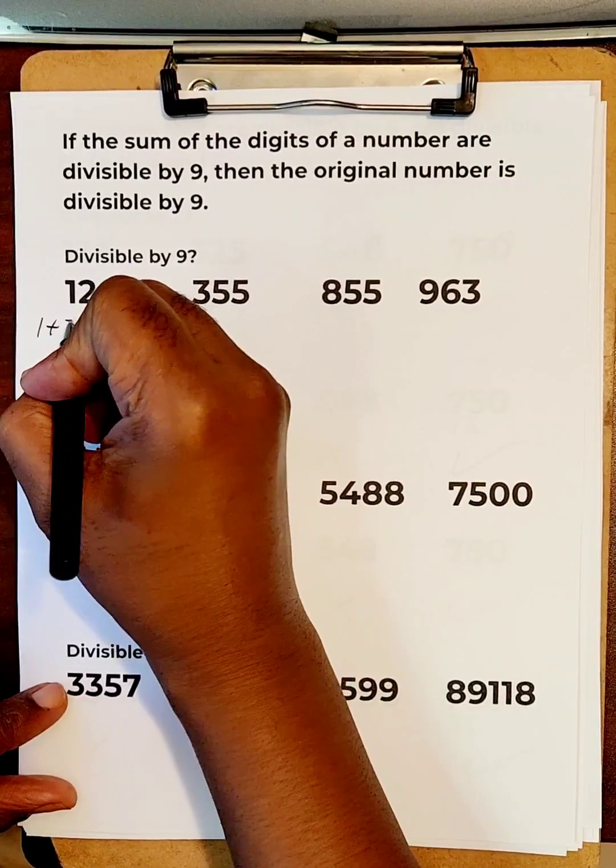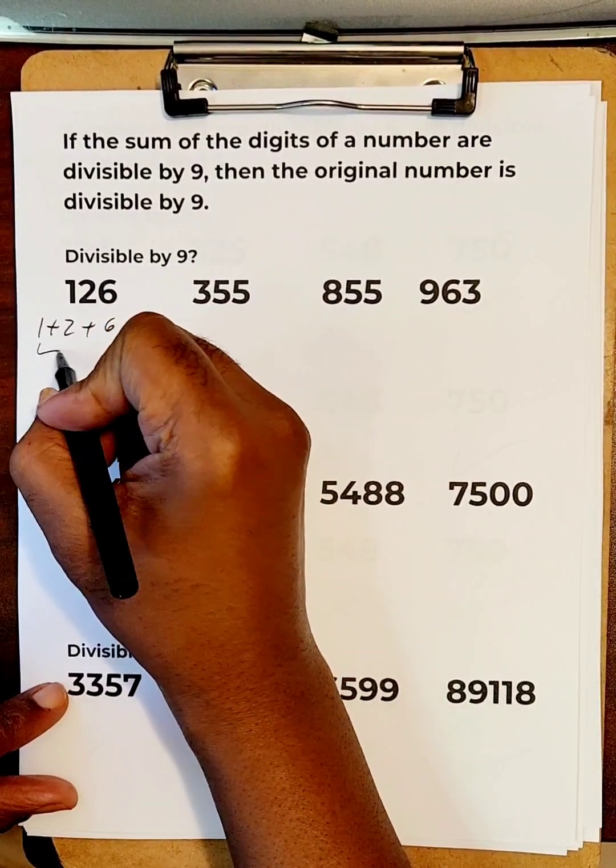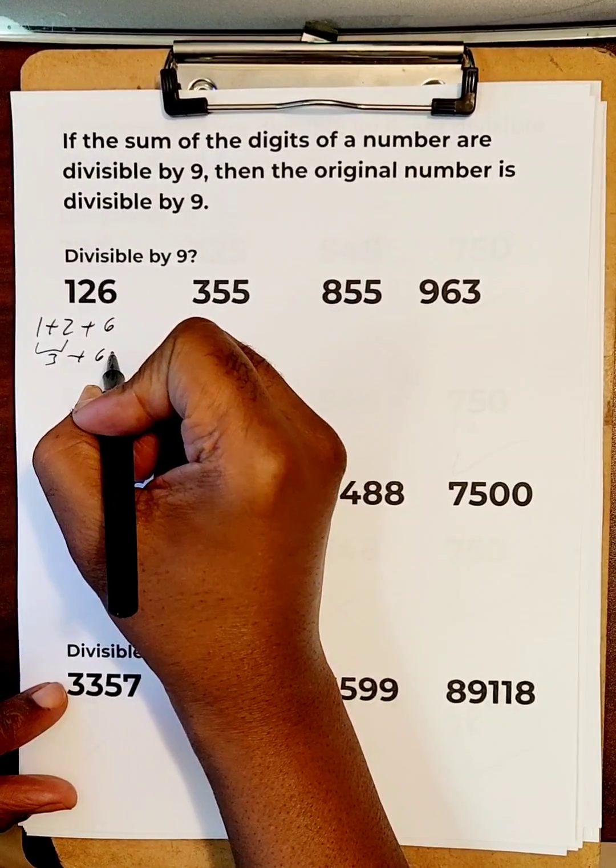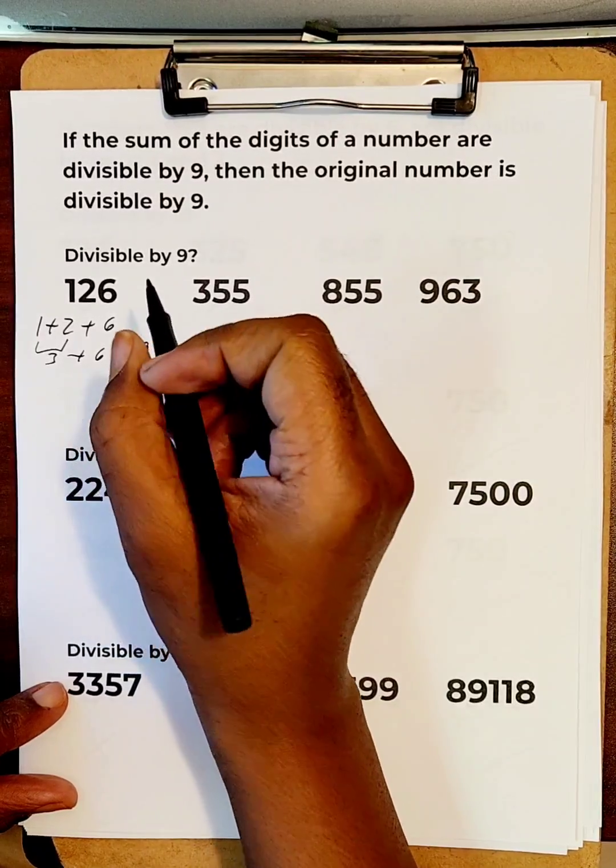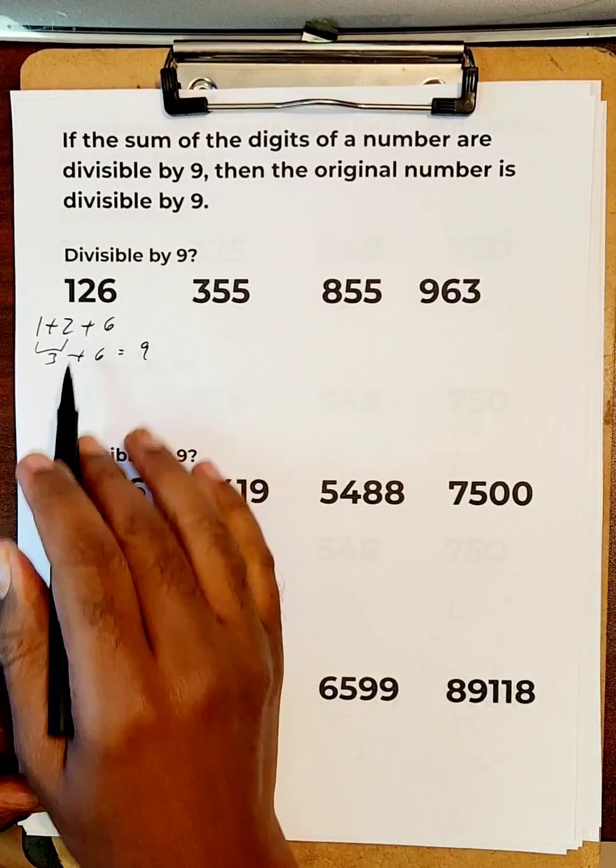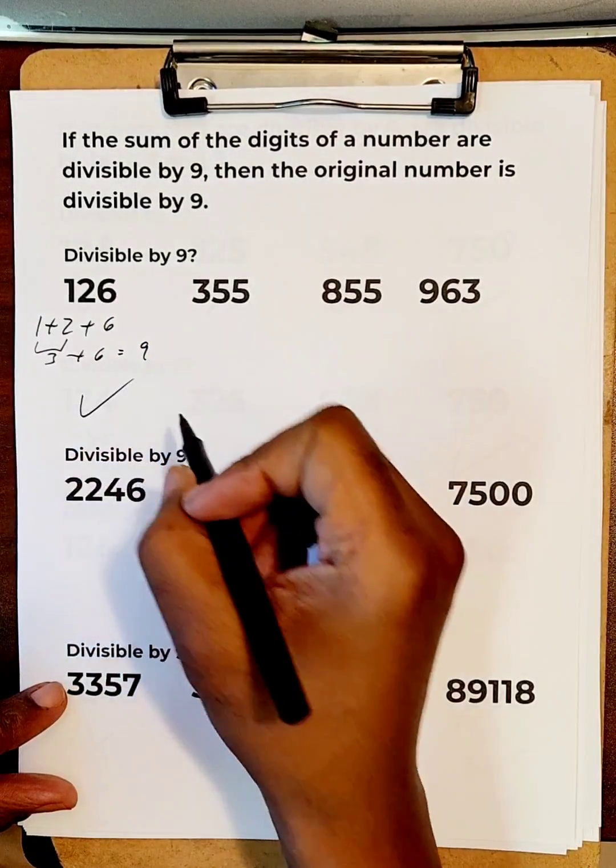I'm going to take 1 plus 2 plus 6. I get 3 plus 6, and 3 plus 6 is 9. So, 126 is divisible by 9.